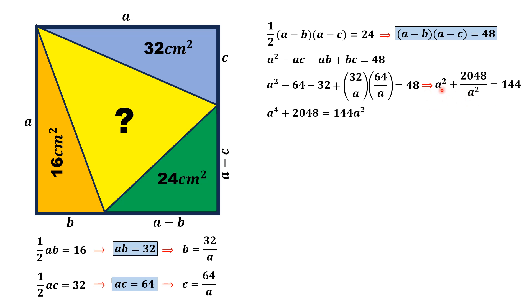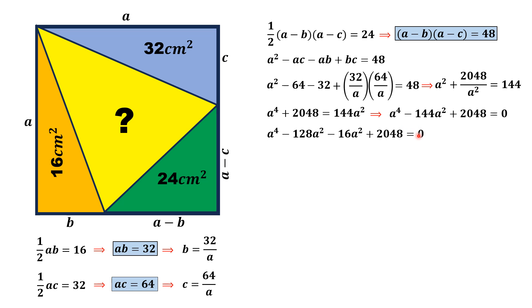Multiplying both sides by a² we get a⁴ + 2048 = 144a². Taking 144a² to the left side we get a⁴ minus 144a² + 2048 = 0. This equation is quadratic in a², so solving for a² by factorization, we can factorize 144 as 128 and 16.